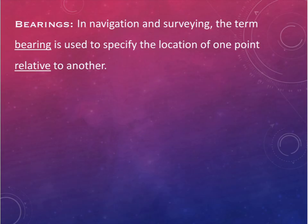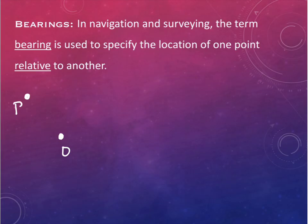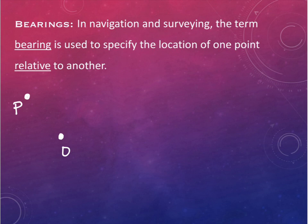Think about ships in the sea - two locations, and just knowing the distance isn't enough. If we say we're 1,000 feet away, that could be in any direction. So we use north, south, east, and west as our bearings, like on a compass.